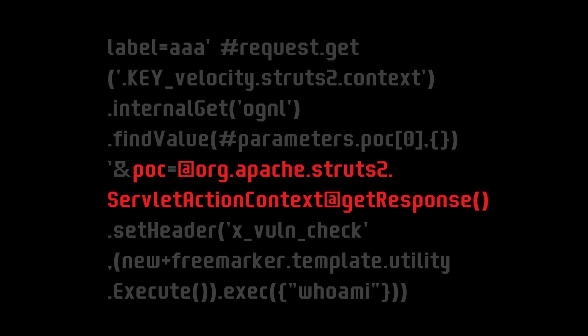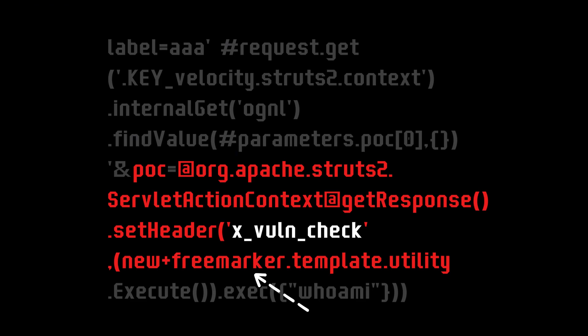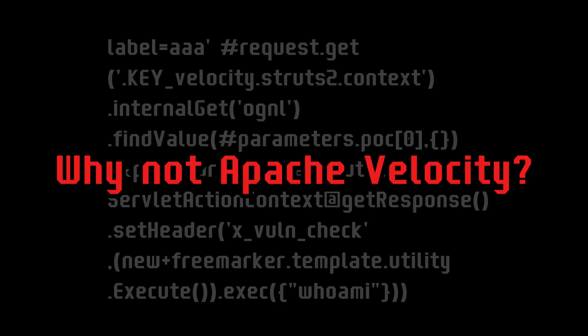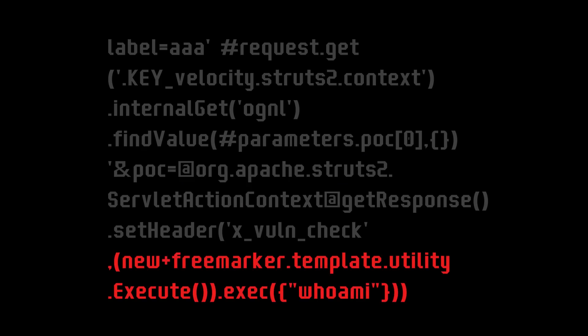The second parameter consists of another gadget chain. It first invokes the Apache Struts servlet — in other words, we are executing a web server function — specifically setting an arbitrary header to the request. That function allows us to chain another expression, which is to trigger another templating engine: FreeMarker. FreeMarker has functions that allow executing system commands. But why do we need to trigger another templating engine rather than just using Apache Velocity? I think it's because it is a lot easier to do in FreeMarker and makes the payload shorter. Based on my testing, this payload can still be made shorter. Let's go to the terminal and see.